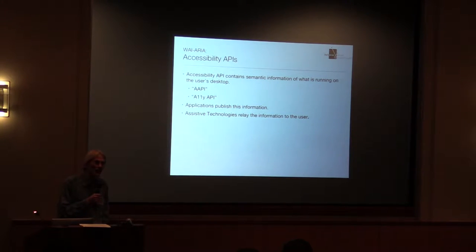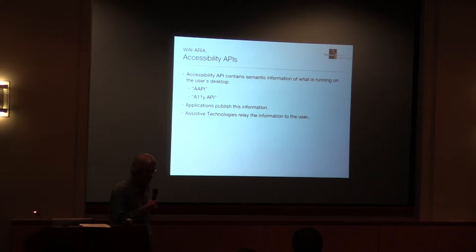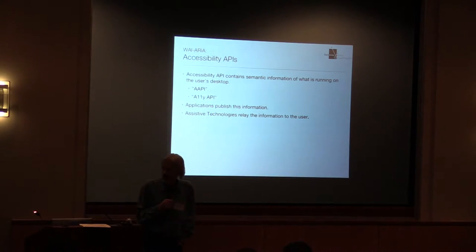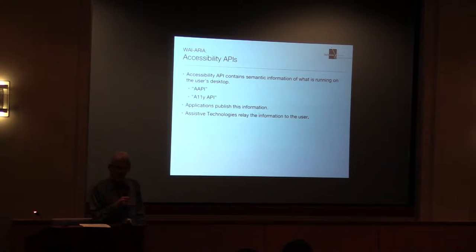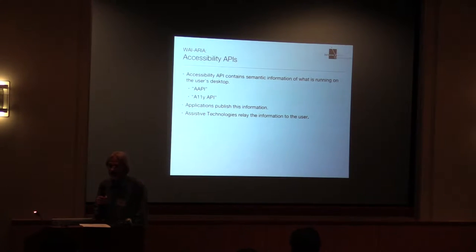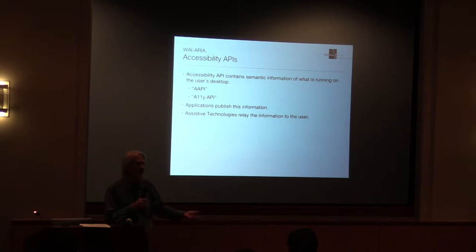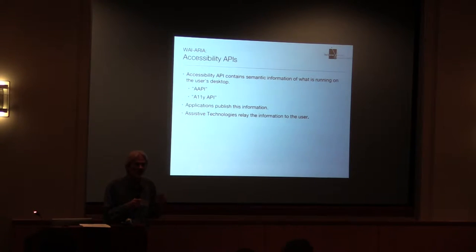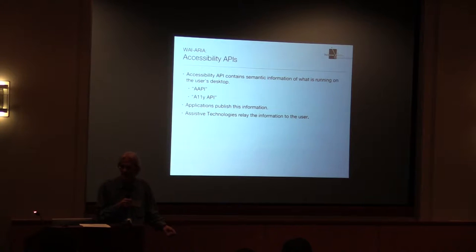An accessibility API contains semantic information about what is running on the user's desktop. It's sometimes abbreviated AAPI, and sometimes you'll hear people say ARIA API. It's the job of the various applications running on the desktop to publish this accessibility information out to the accessibility layer, and the job of assistive technologies to consult that layer and relay the information to the user.